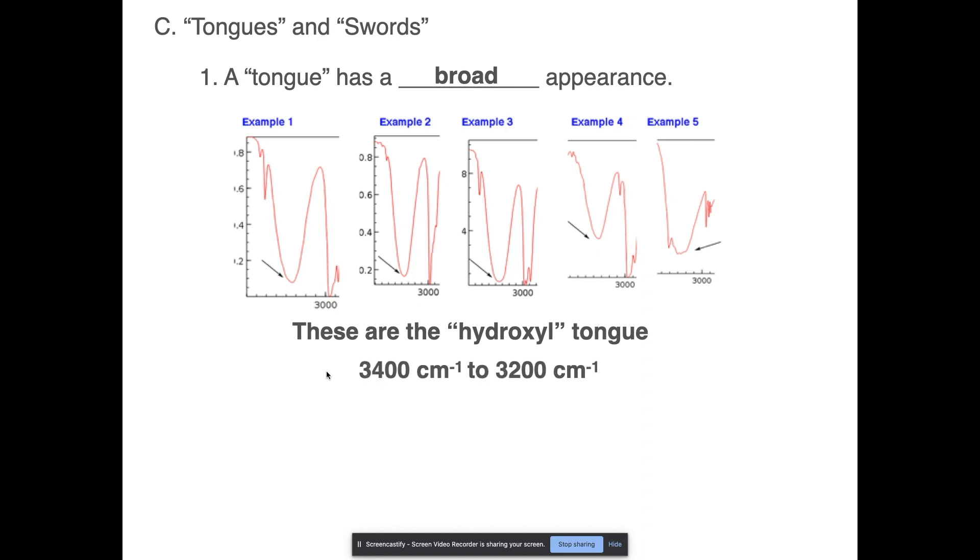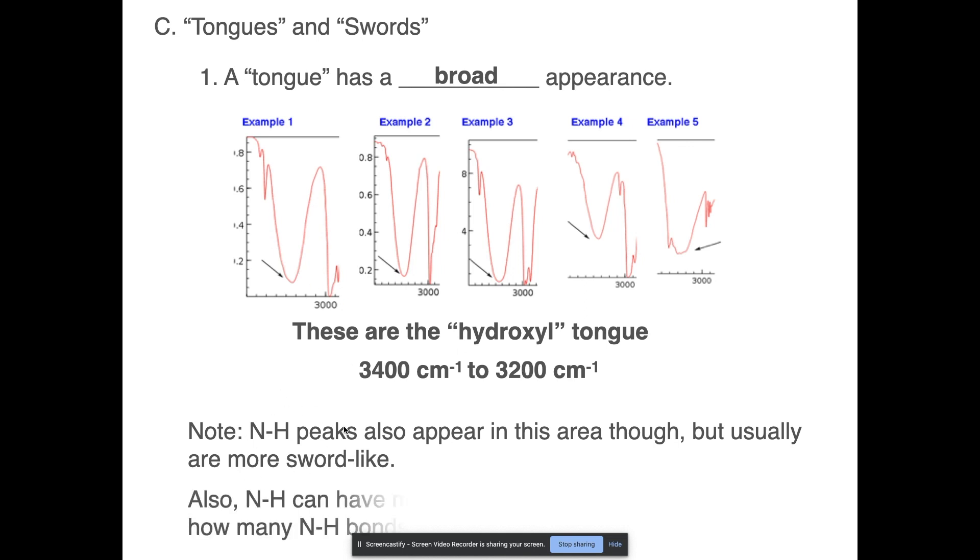So where do these tongues tend to occur? They tend to occur between 3,400 and 3,200, and that would be your telltale sign that you have an alcohol. Now note that we also have nitrogen hydrogen bonds that also occur in that region, but usually they're a lot more pointed and they're not as broad as this. The more you see IR spec readouts, the better you'll get at knowing the difference between an alcohol versus an amine. And another thing is that NH peaks tend to have multiple peaks. So you don't just get one big broad one, you tend to get little ones within it too. You'll see a lot of up and down motion that can let you know that you have an amine instead of an alcohol. And that has to do with how many NH bonds you have.